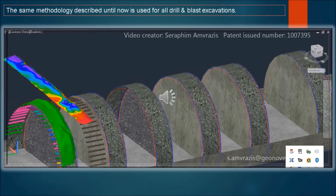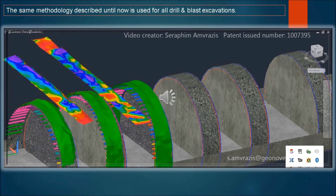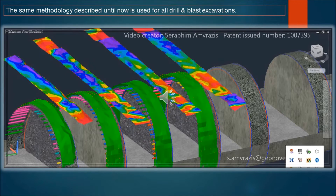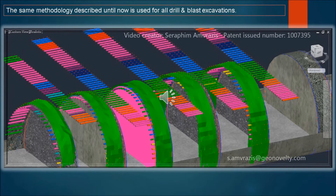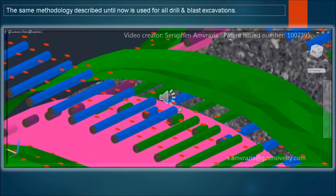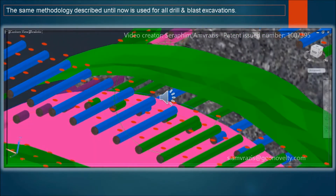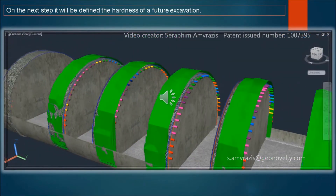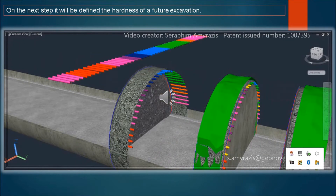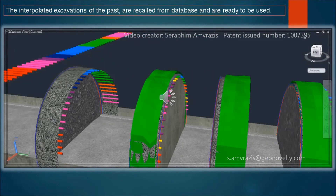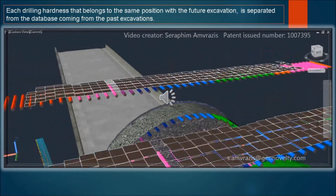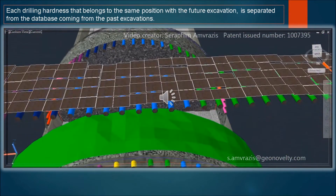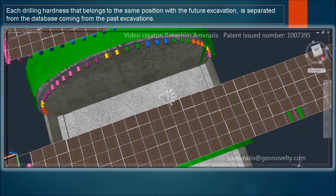The same methodology described until now is used for all drill and blast excavations. The interpolated excavations of the past are recalled from the database and are ready to be used. Each drilling hardness that belongs to the same position as the future excavation is separated from the database coming from the past excavations.